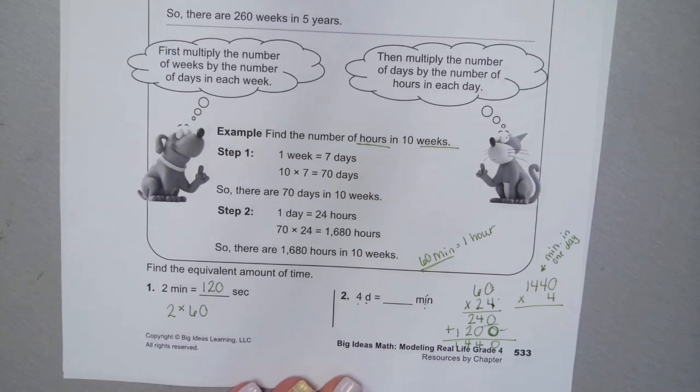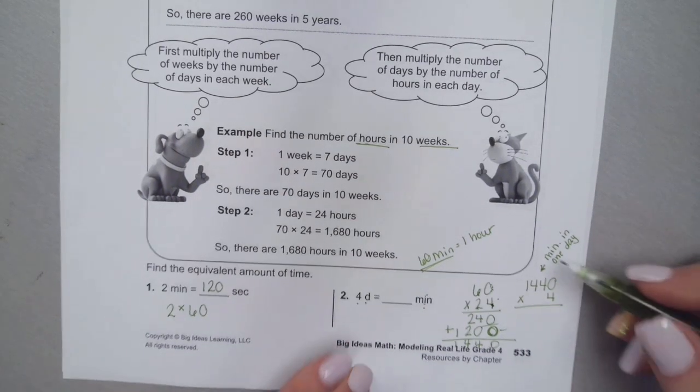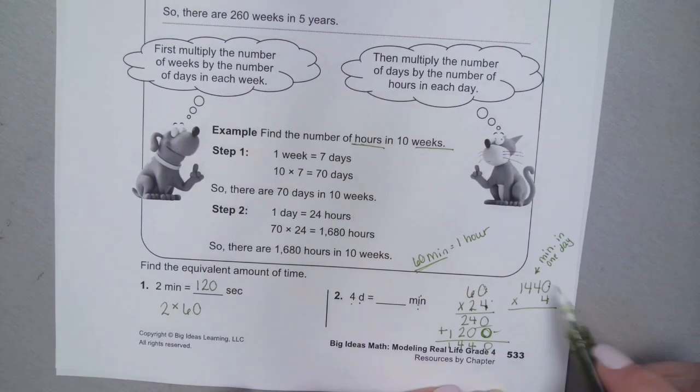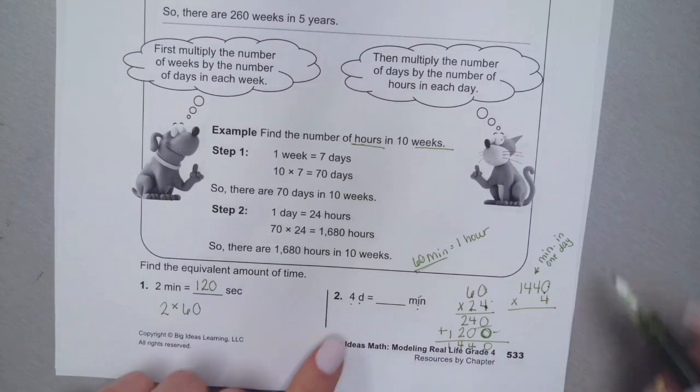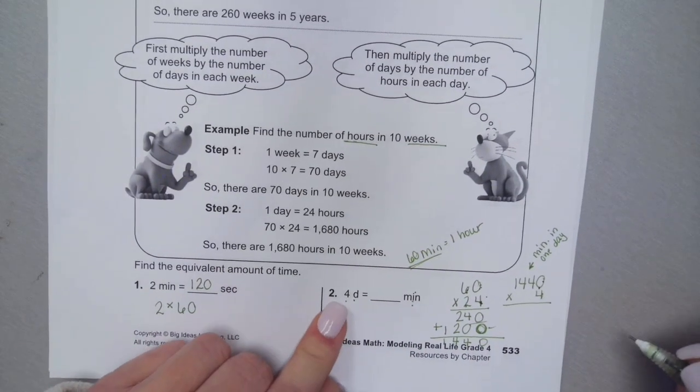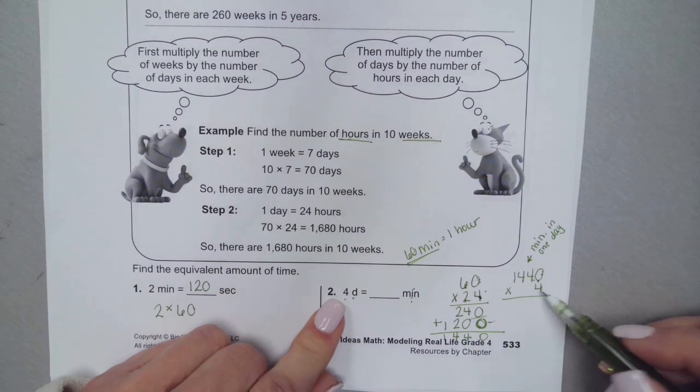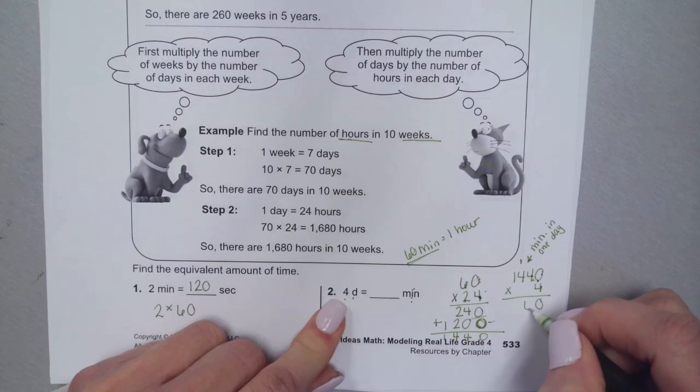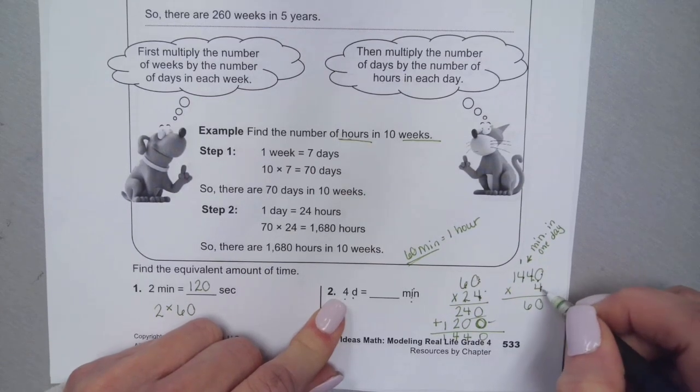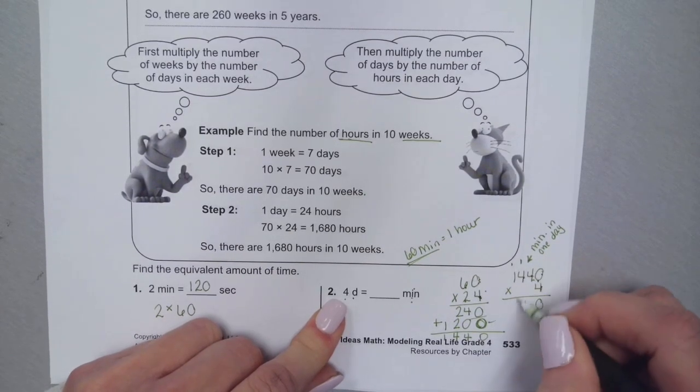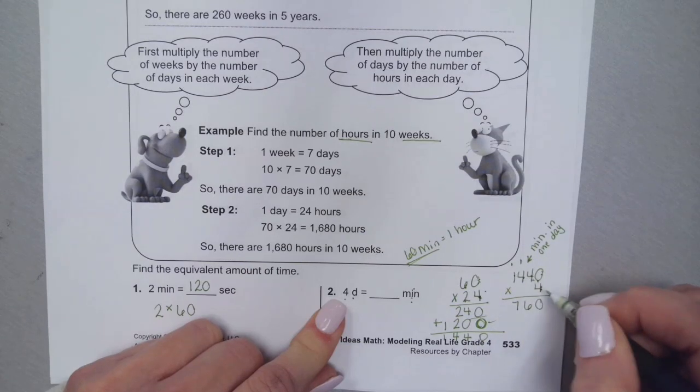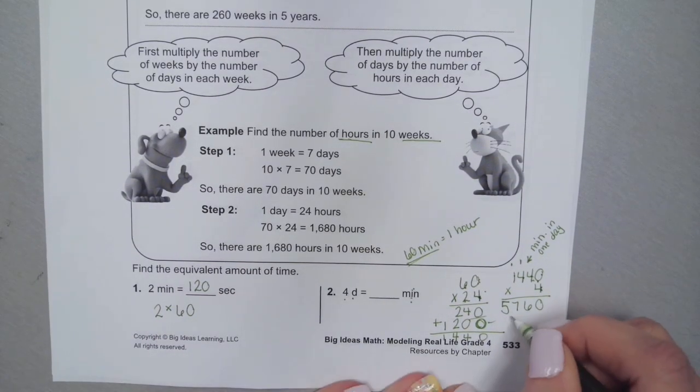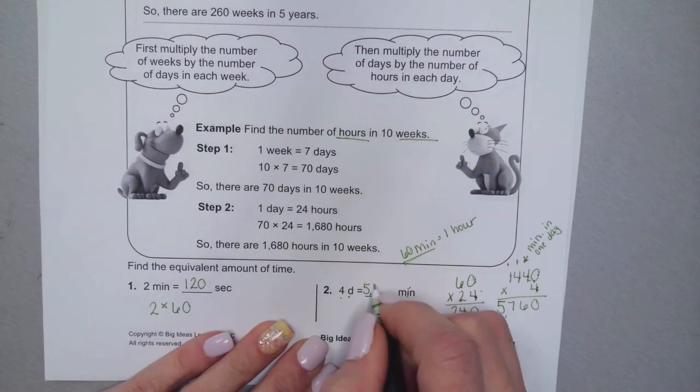Now that I know how many minutes there are in one day, I can find how many minutes there are in four days. Zero times four is zero, four times four is sixteen, four times four is sixteen plus one is seventeen, one times four is four plus one is five. So 5,760—that is a lot of minutes.